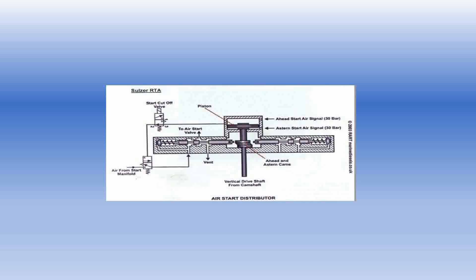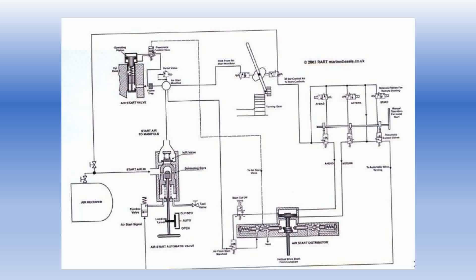Once you have understood this much, we can make sense of the starting air diagram. The air bottle shown here has air at 30 bar. Once you open the air bottle, air goes to two different directions: one is to the top part of the main starting air valve, and another is to the turning gear interlock. If the turning gear is activated — meaning the engine is in shutdown condition — air will not go beyond the turning gear interlock. However, once the turning gear is disengaged, the air passes through this interlock and goes to the solenoid valve assembly as well as the pneumatic control assembly.